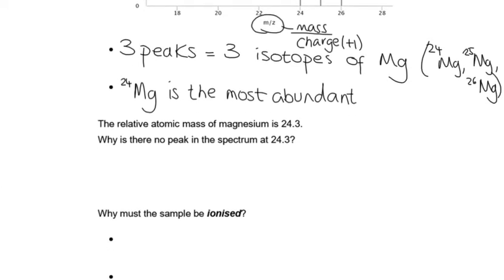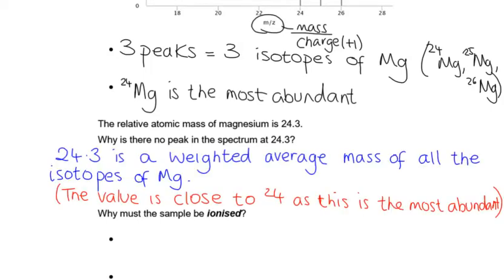Now in the periodic table, if you look at your periodic table, you'll see that the number next to magnesium is not 24 or 25 or 26, it's 24.3. Why is there no peak in our mass spectrum at 24.3? So 24.3 is not the mass of an isotope, it's the weighted average of all the isotopes. Notice that 24.3 is closer to 24 than it is 25 or 26, so it's not just add up the three masses and divide by 3, it's a weighted average.